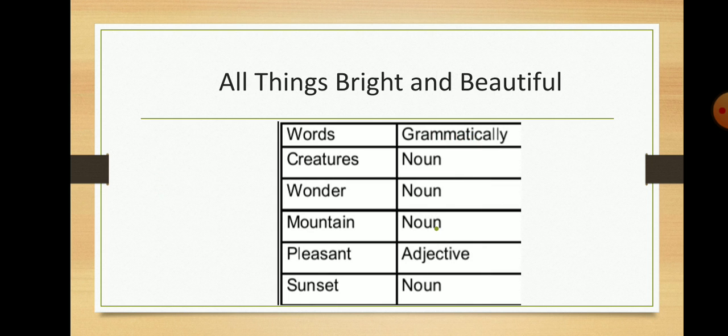Jaise creatures - creature is a noun, wonder is a noun, mountain is a noun, pleasant is adjective, sunset is a noun.